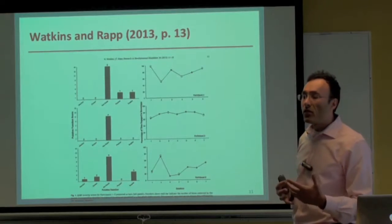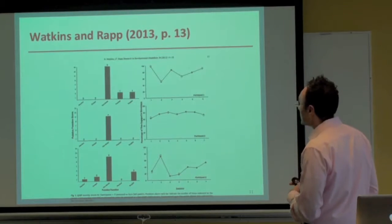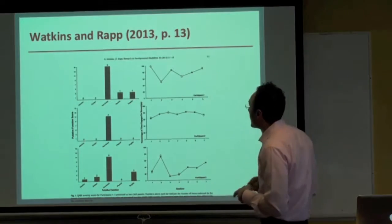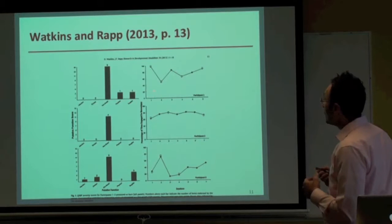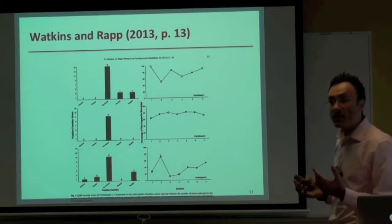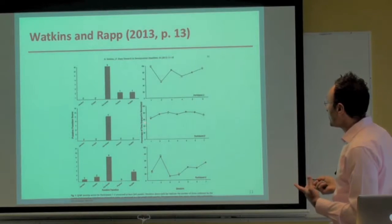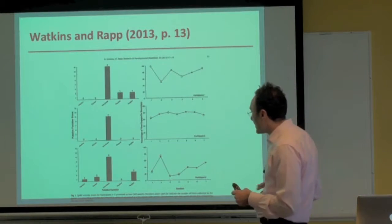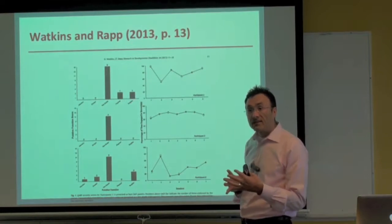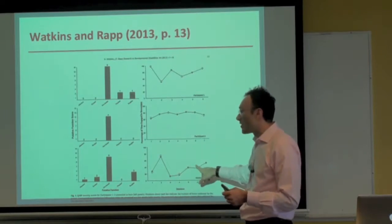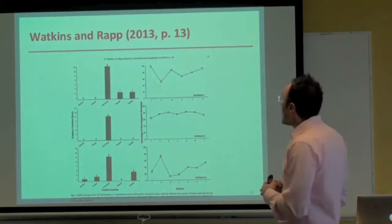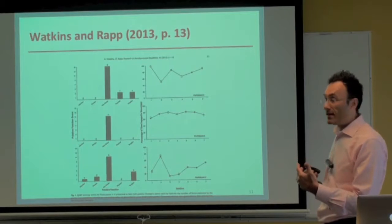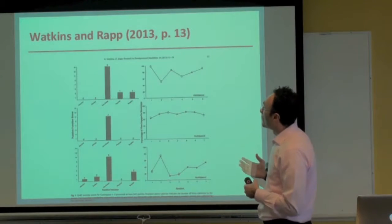We then did extended no-interaction series to confirm this in our functional analysis. The y-axis shows the percentage of time engaged in stereotypy with sessions on the x-axis. Participant one was engaging in stereotypy at least 50% of the time; participant two at least 60% of the time; and participant three showed an increasing trend even in the session with the least. This is very strong evidence that these behaviors continue in the absence of socially mediated consequences, suggesting automatic reinforcement.